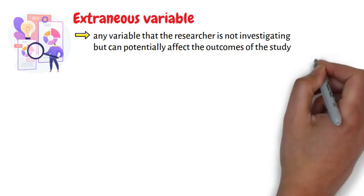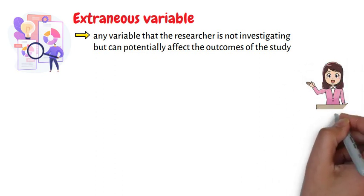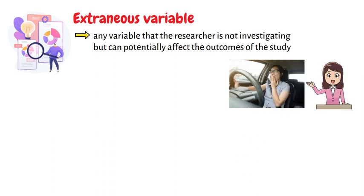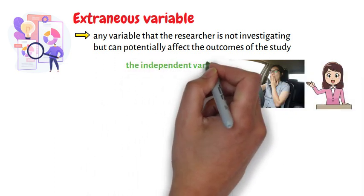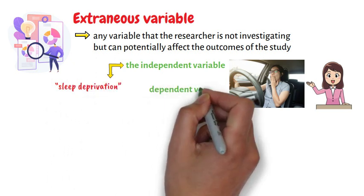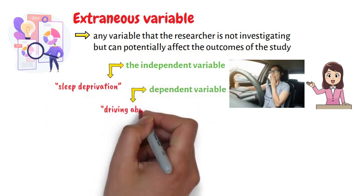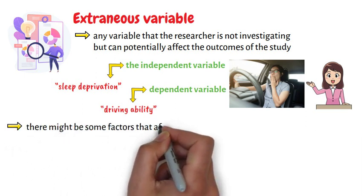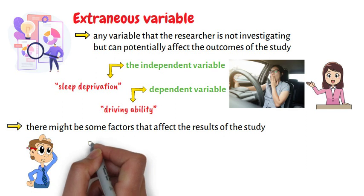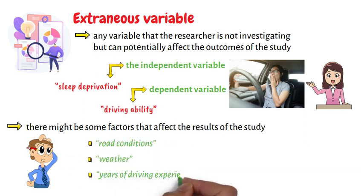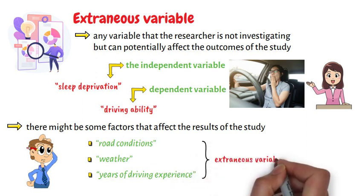Let's consider a study which aims to determine the effect of sleep deprivation on driving ability. The independent variable here is sleep deprivation and the dependent variable is driving ability. There might be some factors that affect the results of the study, such as road conditions, weather, and years of driving experience. These are what we call extraneous variables.